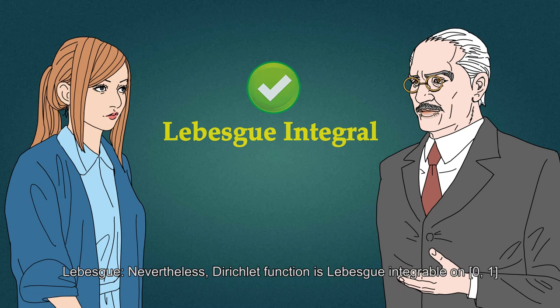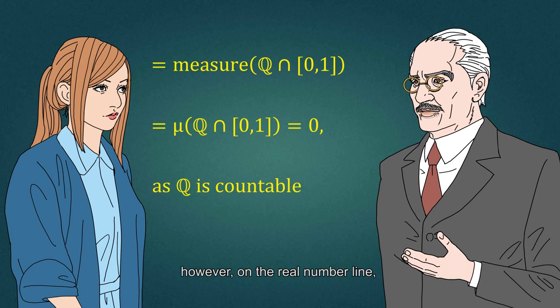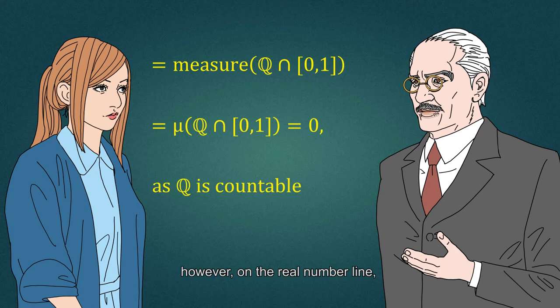In our daily life, most of the time we only use rational numbers. However, on the real number line, the uncountable transcendental numbers are far more than the countable algebraic numbers.